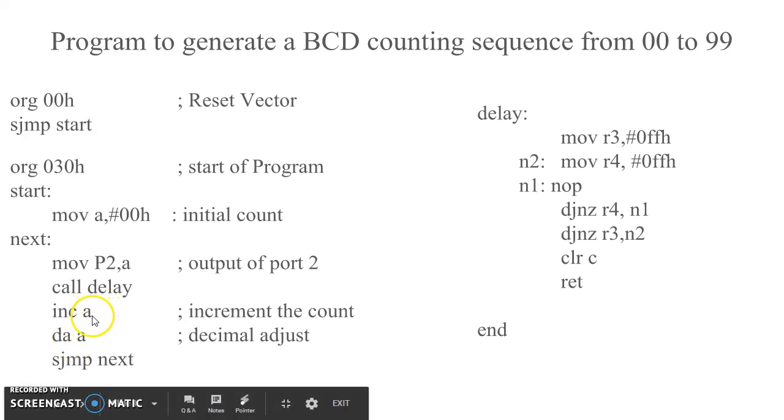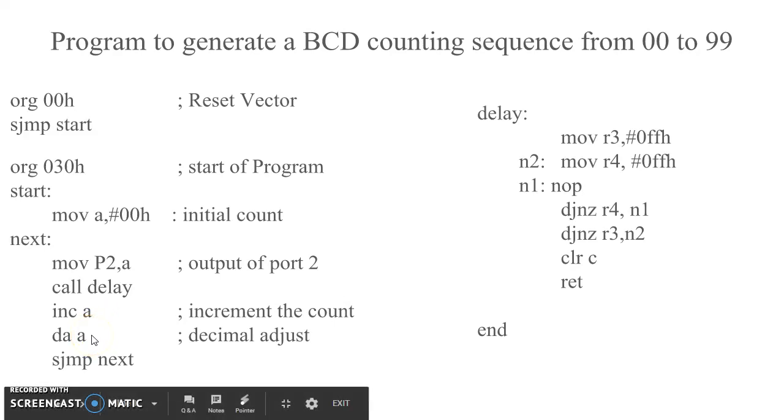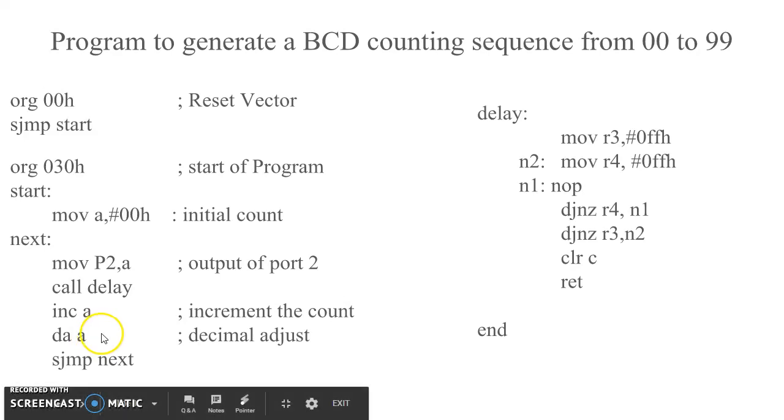Since the increment is in binary, the count needs to be adjusted to BCD in case it exceeds 9.